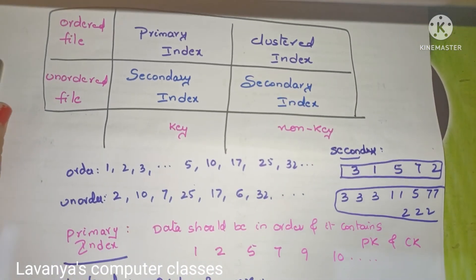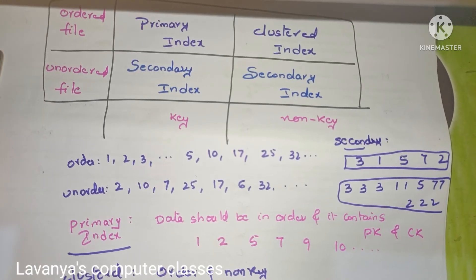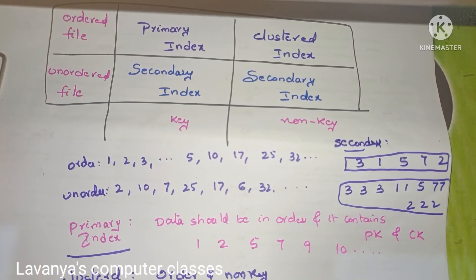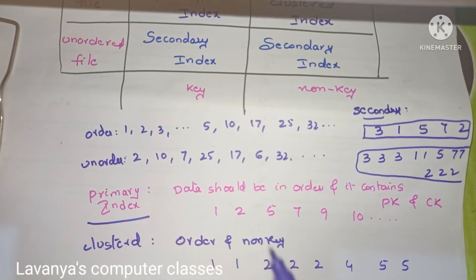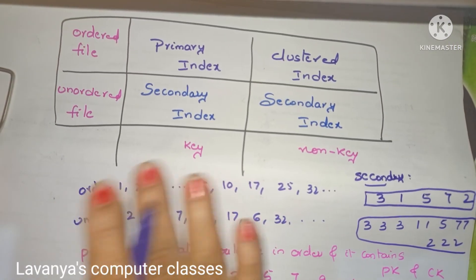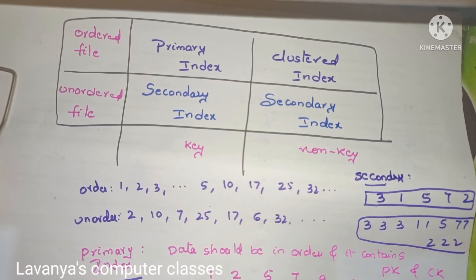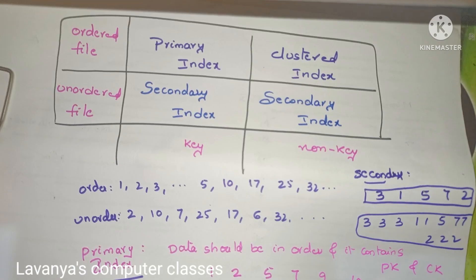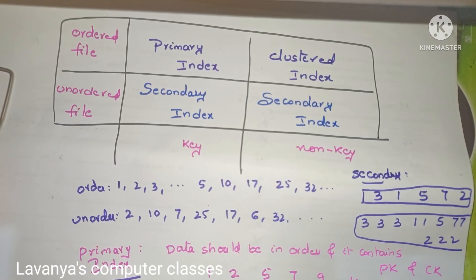So these are the types of indexes. In the next video, I will explain in detail what is primary index, examples of primary index, and the types — dense and sparse index. This is only the main concept of the types of indexing. Thank you for watching my video. If you like this video, please subscribe to my channel and share it with your friends. Thank you.